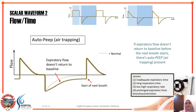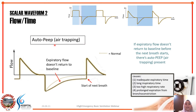Looking at a flow versus time graphic: inspiration is the upward portion and expiration begins when the patient breathes out. What is normal is that the expiratory flow line should return to baseline before the next breath starts. If the expiratory flow doesn't return to baseline before the next breath, it means not all the inspired air has returned to the ventilator — some air is still trapped inside the lung, which is called air trapping or auto-PEEP.